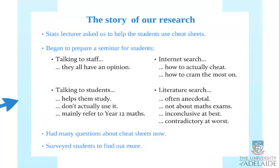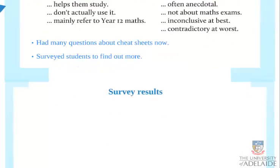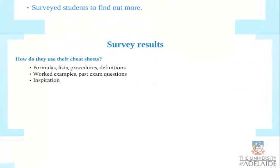That left us with a lot of questions, so we surveyed students to find out more about their experience. When asked how they used their cheat sheets, they told us they used them for formulas, lists, procedures, and definitions — things you can write down clearly and refer to occasionally in the exam. They also put worked examples and past exam questions on them, and used them for inspiration: when stuck, they looked at the cheat sheet hoping it might help them think of something to do, and it reminded them of something else.